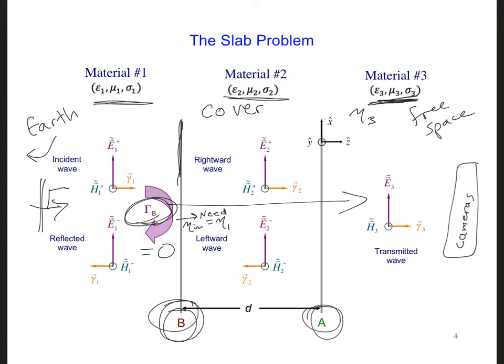So then to find the input impedance at interface B, we then need to transform the impedance of material number three towards the generator, towards the direction of incidence, incident propagation. And we have to transform it over the thickness of material number two.